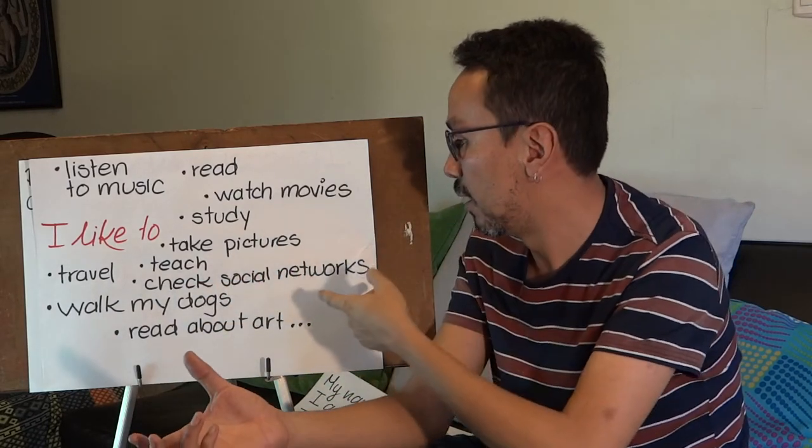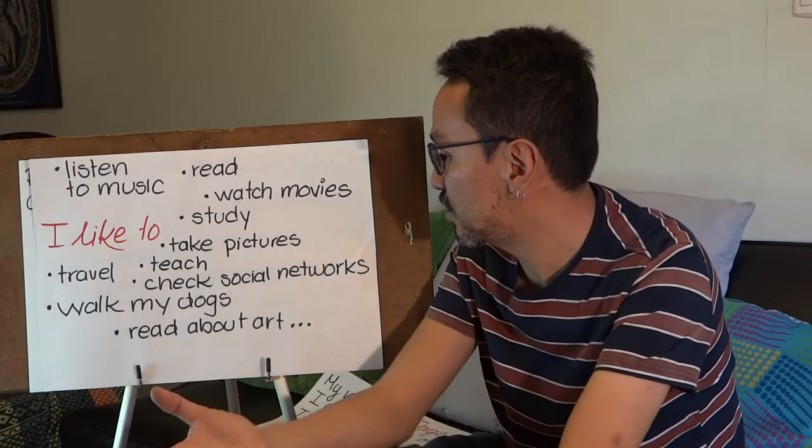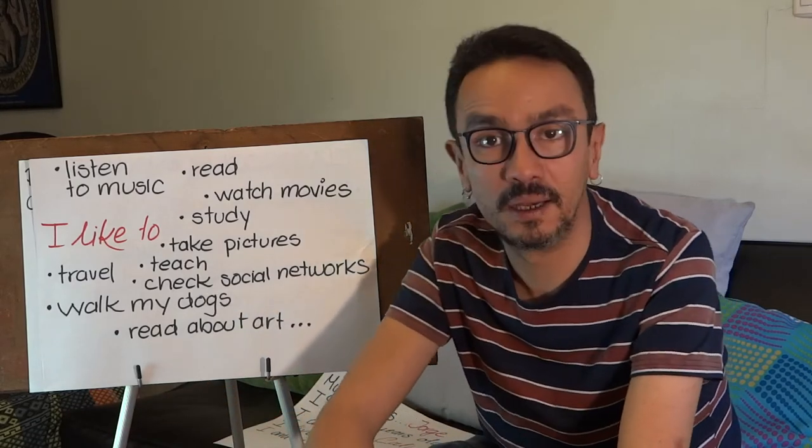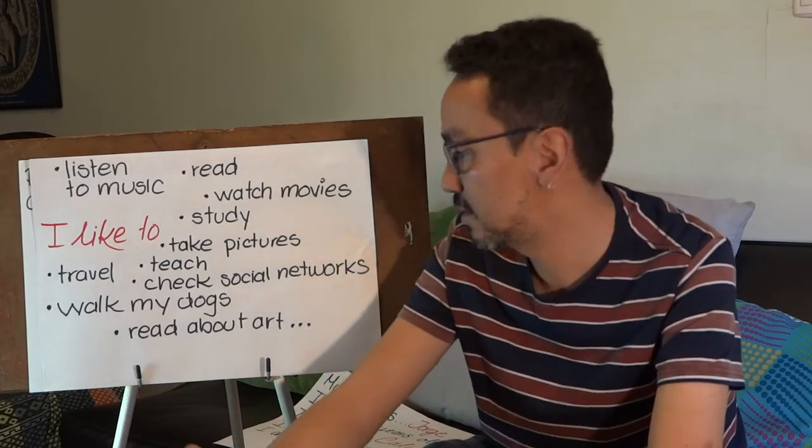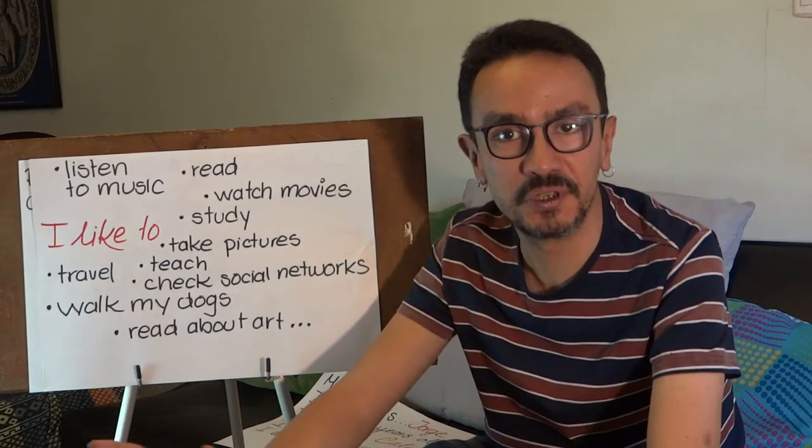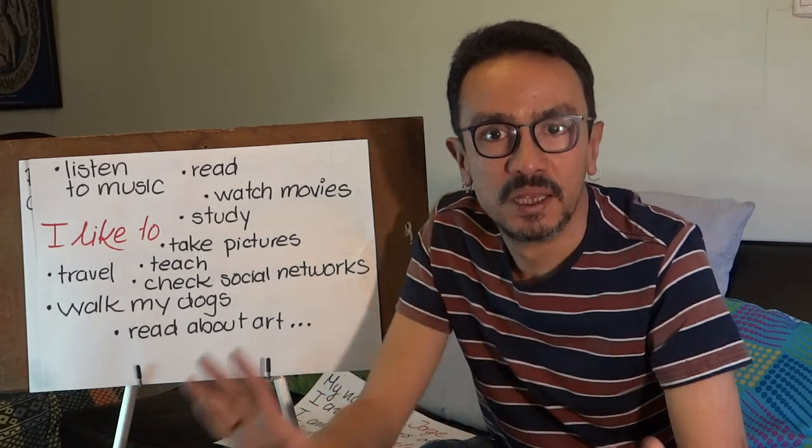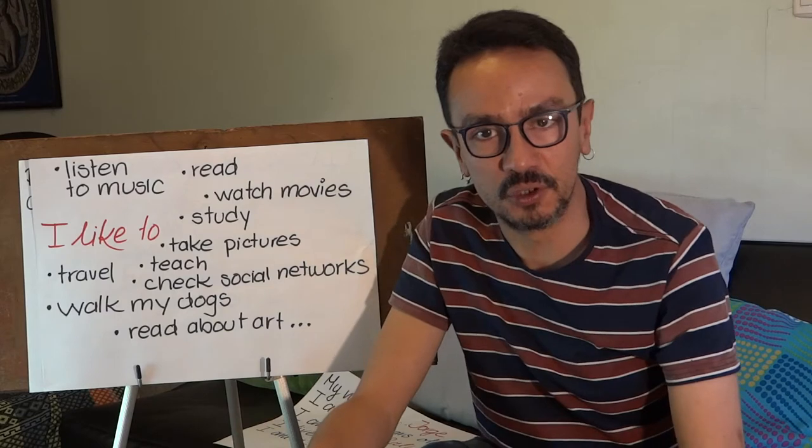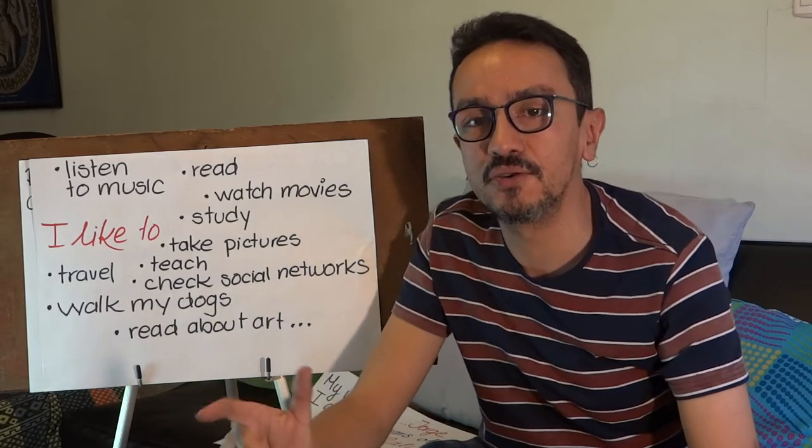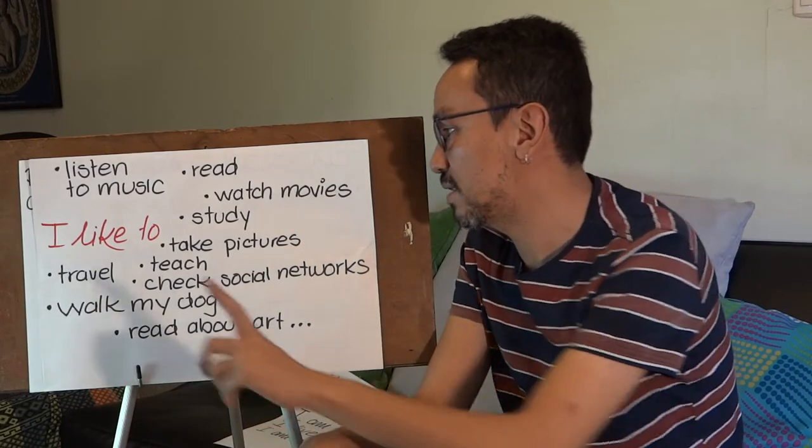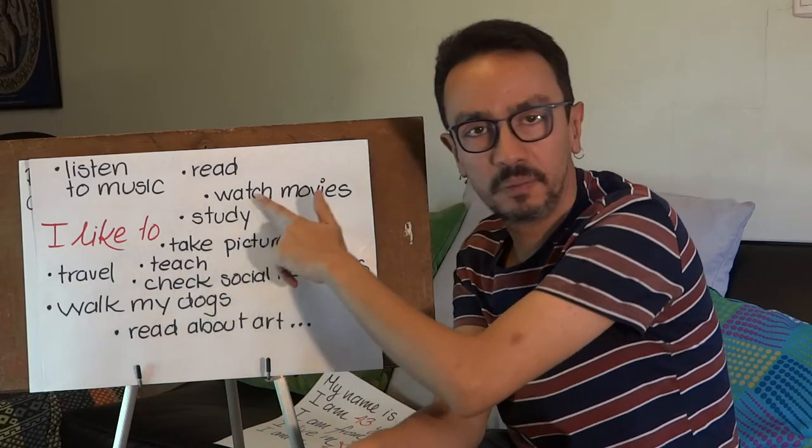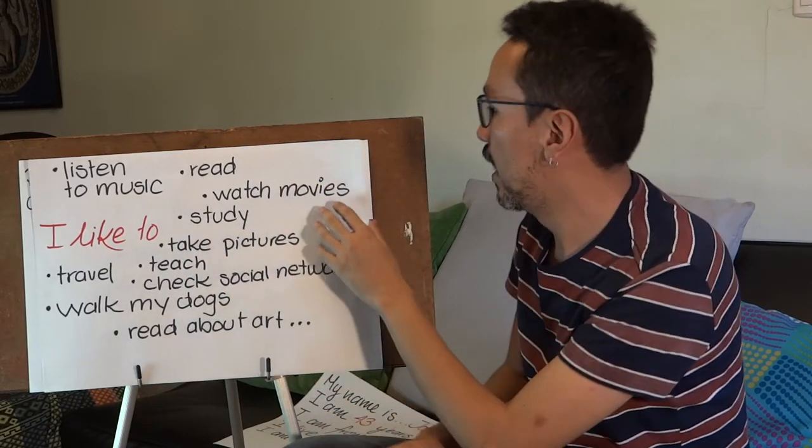I like to check my social networks, I like to walk my dogs, I like to read books about art. So every time you need to talk about the things that you like to do, you can say I like to plus a verb, and that's it.